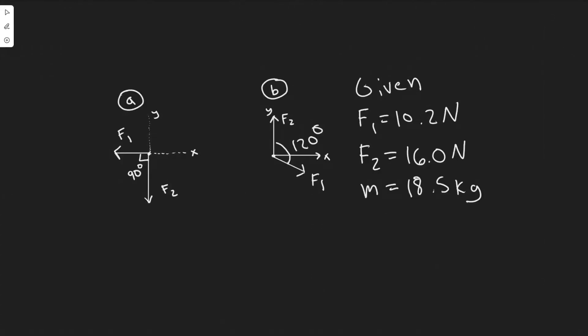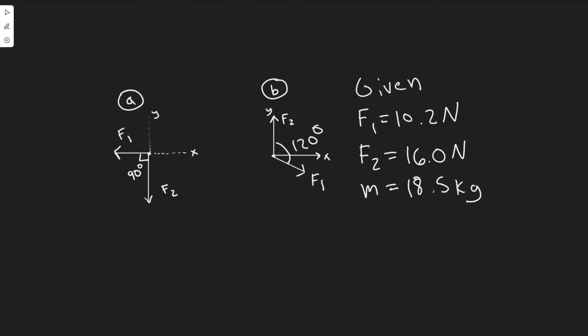In this problem we're told two forces F1 and F2 are shown in the figure and they act on an 18.5 kilogram object on a frictionless tabletop. If F1 is 10.2 newtons and F2 is 16 newtons, find the net force on the object and acceleration for A and B. We're going to be finding the acceleration and net force for these two figures.